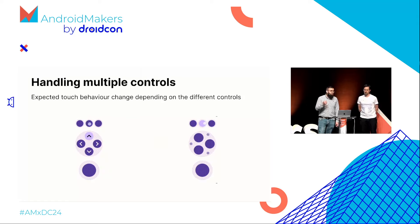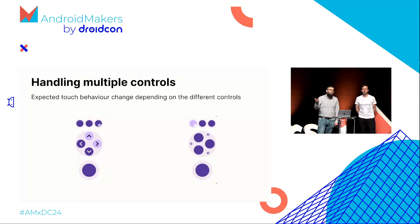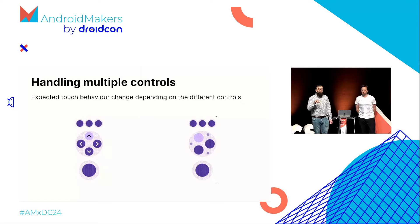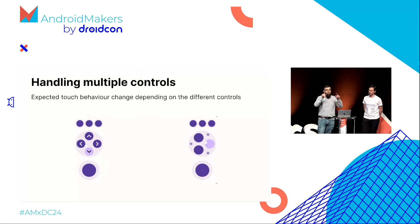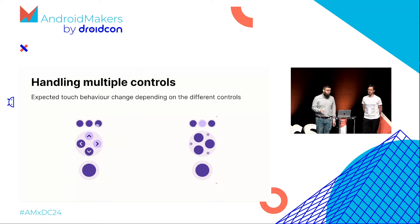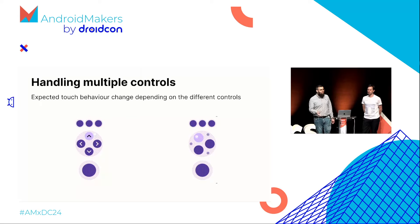This is very hard to do with the drag API when handling different controls. So we decided to go down to the pointer input API, which gives us raw pointers. Some pointers will move among different controls, so we decided to have a single big compose function that handles all touch events and dispatches them to the proper controls. We also use a single input state so the gamepad itself has one unified input state, not spread among individual controls.